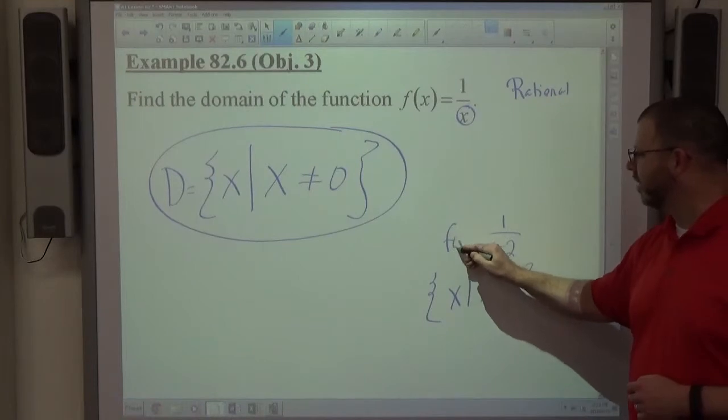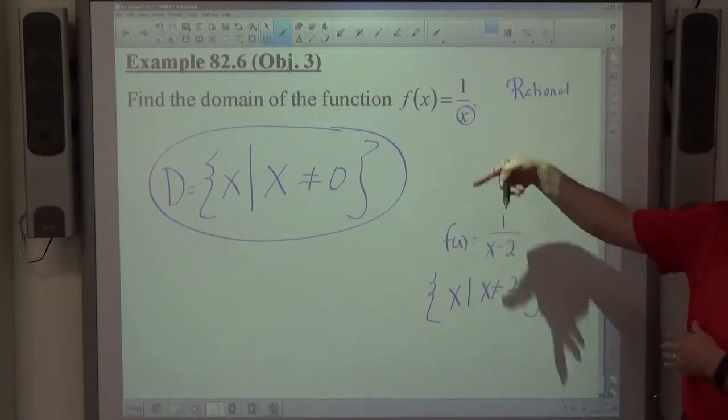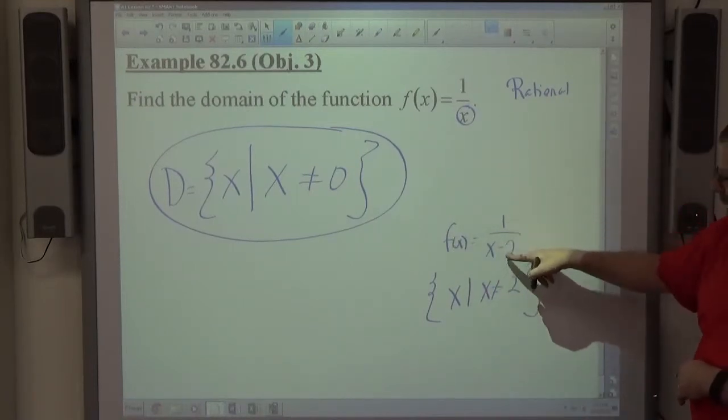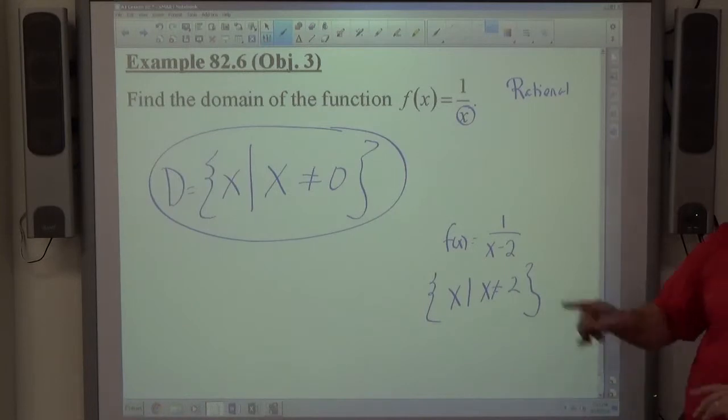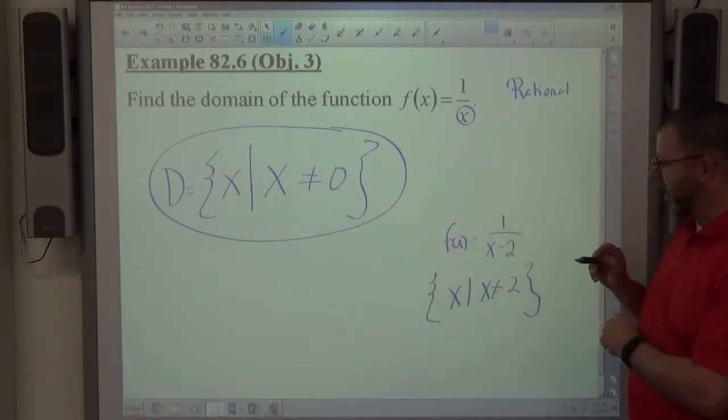So again, if your function's just 1/x, then by all means it can't be 0. But 1 over x minus 2, now x can't equal 2. Anything else is fine because x equals 2, 2 minus 2 is 0. Now we're divided by 0 all of a sudden. So it's not always 0. It just starts off that way.